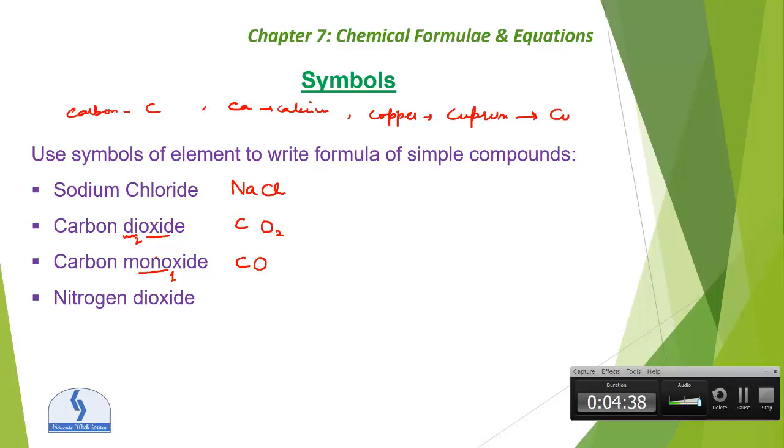Nitrogen dioxide. Now what is the formula of nitrogen dioxide? Yes, nitrogen is N, oxide is O, and because of this di we are doing nitrogen O2, right? Nitrogen trioxide. Nitrogen again is N, oxide is O, but this is tri.